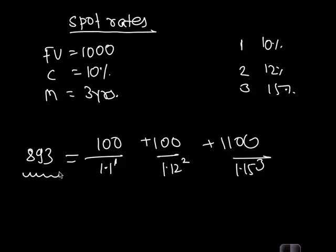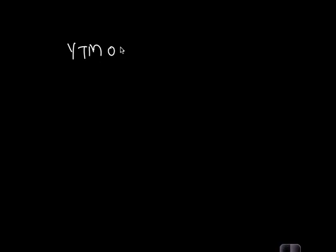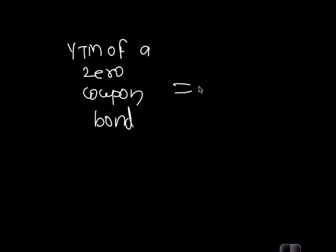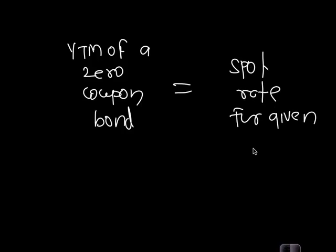The YTM of a zero coupon bond is the same as the spot rate for a given maturity. When you take the YTM of a particular zero coupon bond, it is equivalent to the spot rate for that maturity.